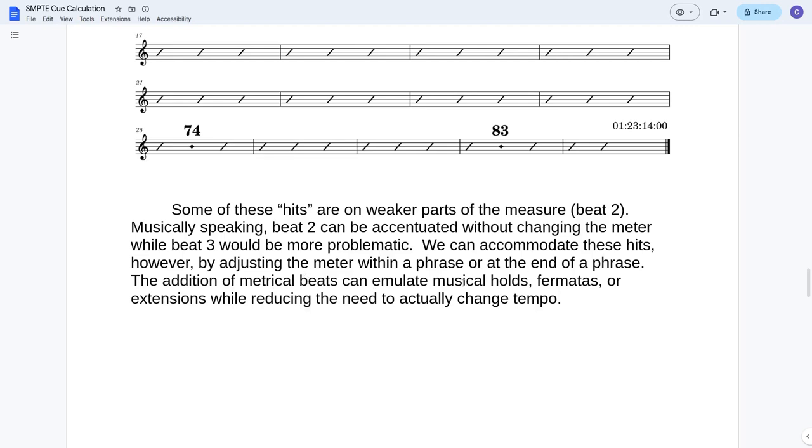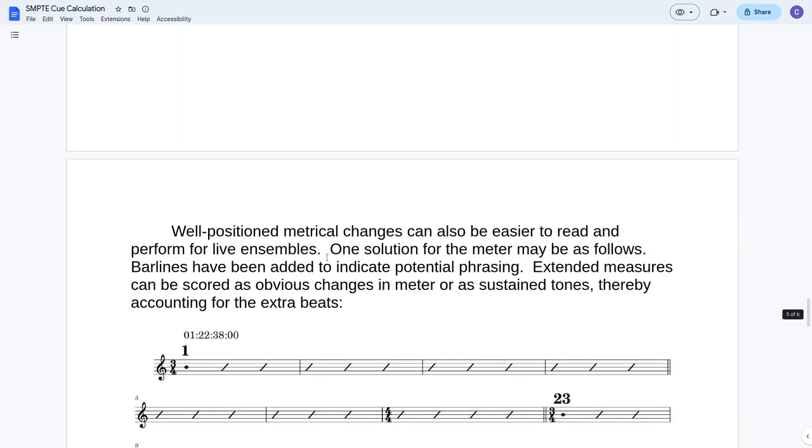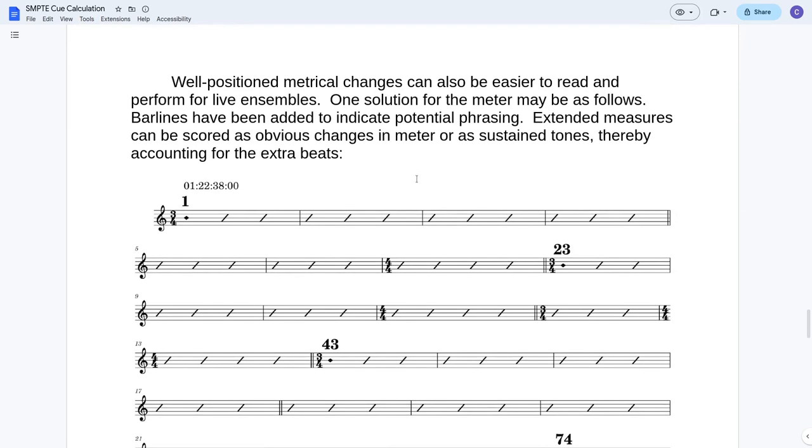A couple of these line up on the downbeat of a measure, and then three of them line up on beat two. Some of these hits are on weaker parts of the measure, beat two. Musically speaking, beat two can be accentuated without changing the meter. It's not too hard to accentuate beat two in a 3/4 time, while beat three would be more problematic. But we can accommodate these hits by adjusting the meter within a phrase or at the end of a phrase. The addition of metrical beats can emulate musical holds or extensions while reducing the need to actually change tempo.